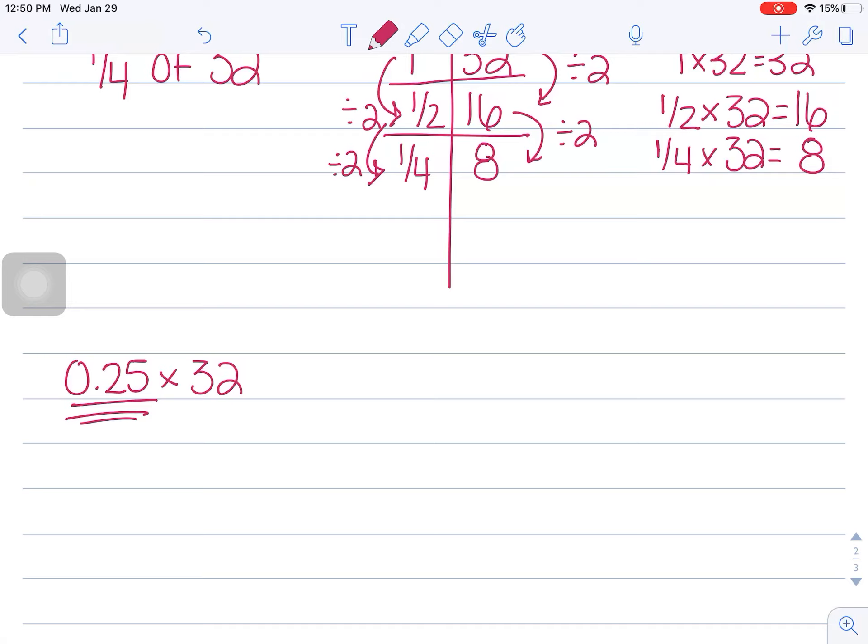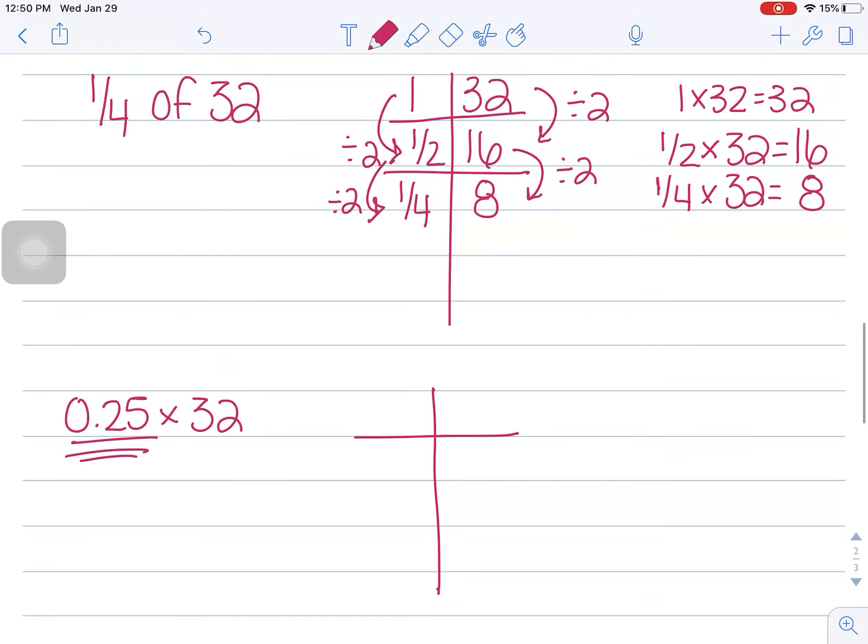And I want you to think about how you can figure out how many quarters, or if you have 32 quarters, how much money you have. Does that make sense? So let's draw that one out in a ratio table. Bear with me here. So I know that four quarters is a dollar, right?